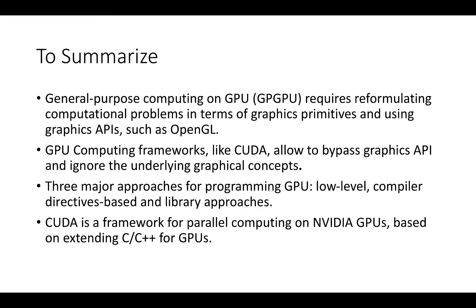In summary, in this lecture we touched upon four main points. First, GPGPU initially required reformulating computational problems in terms of graphics primitives using graphics APIs and concepts. Second, GPU computing frameworks like CUDA allow us to bypass graphics APIs and use more HPC interfaces. Third, there are three major approaches for programming GPUs: low-level, compiler directives, and library approaches. And we are going to use CUDA — a framework for parallel computing on NVIDIA GPUs. In the next lecture, we will dive into CUDA, looking at all the basic stuff we need to know about CUDA programming.